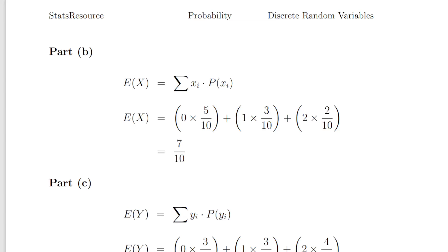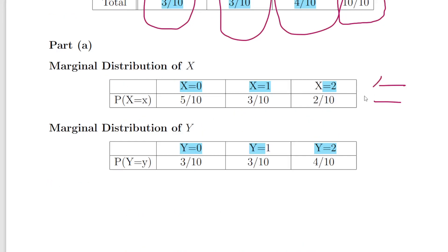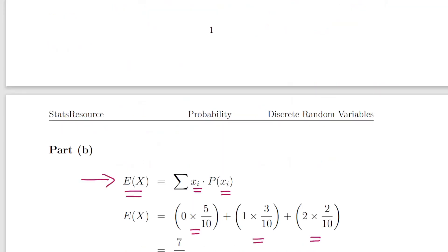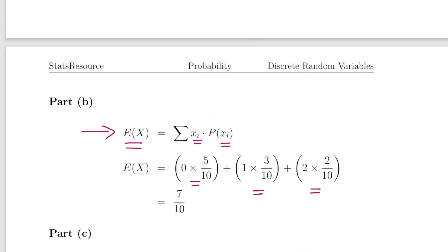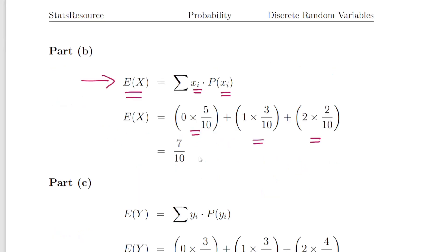Now, what we'll do is calculate the expected value of X. That is the sum of each of the X values times their probabilities. So 0 times 5 over 10 plus 1 times 3 over 10 plus 2 times 2 over 10. The value times the probability, multiply them out and add them all up. That works out to be 7 over 10.